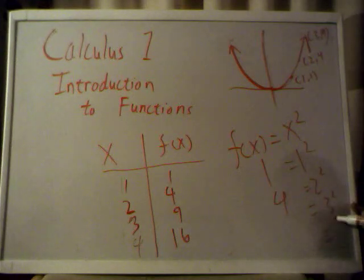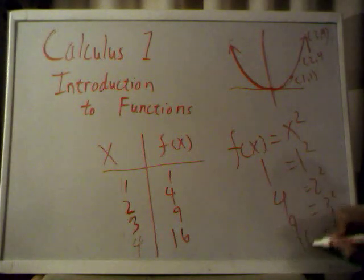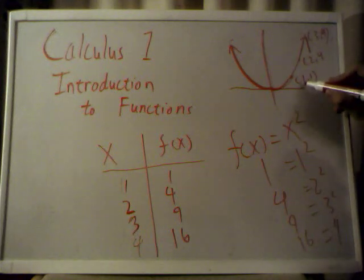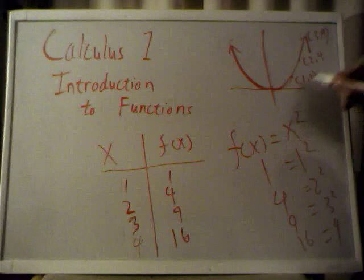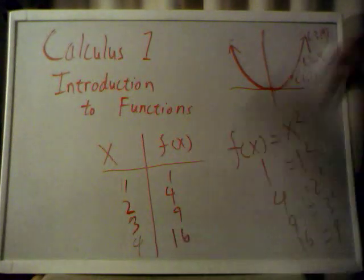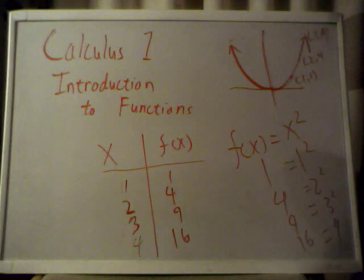You have three squared and then four squared, which gives you nine and sixteen. And graphically, you can see it here, this is your x value, this is your f of x value. And one, one, two, four, three, nine. And I didn't have room for this, but that would be four, sixteen, somewhere up here.